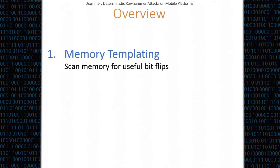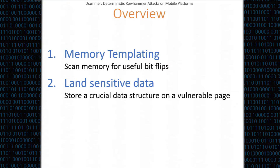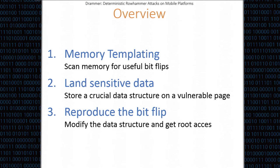The overview of our attack, Drammer, is basically three steps. First, we're going to do memory templating — scan memory for bit flips that we can exploit. Then we're going to land some sensitive data into that page that is vulnerable to Rowhammer. And then hammer that vulnerable page and reproduce the bit flip so that we can actually get root access, in this case on a mobile device.